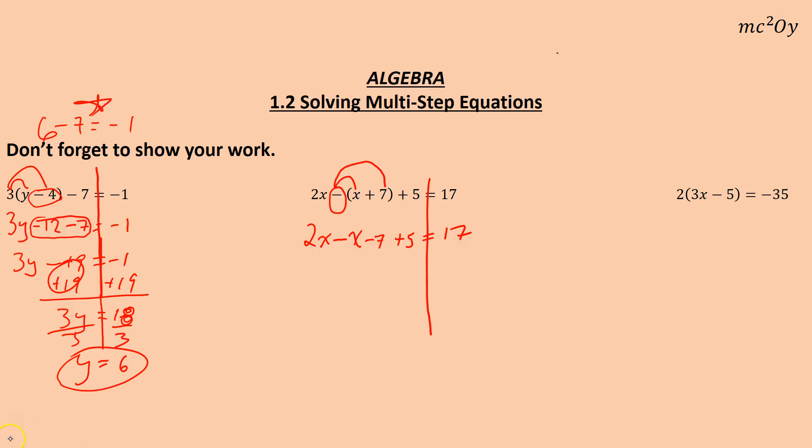We'll put these two together. 2x minus x is 1x. 1x minus 7 plus 5 equals 17. And I can still keep simplifying over here. Negative 7 plus 5 is negative 2. So x minus 2 equals 17.